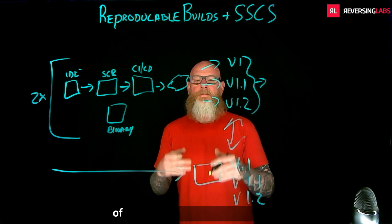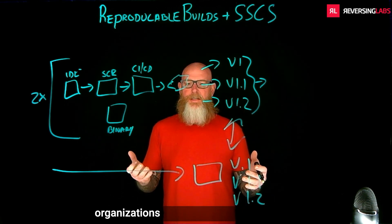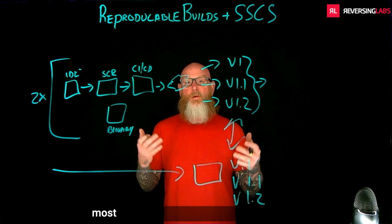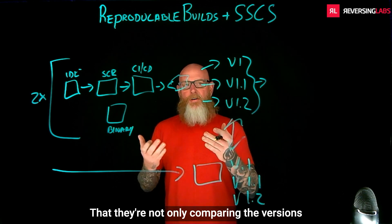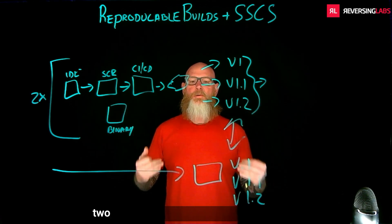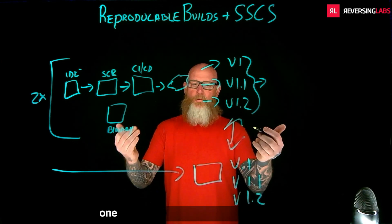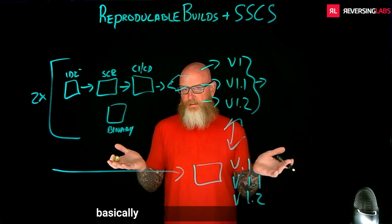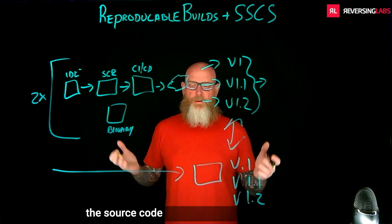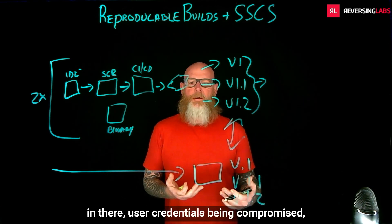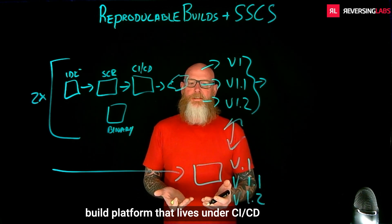You get an understanding of whether something was compromised. This is the advanced course for organizations most concerned about their supply chains — they're not only comparing versions created by a pipeline, they're creating two separate pipelines and comparing those entities because one is locked down and one is potentially compromised. This leads you to identify unknown, maybe novel attacks associated with the source code repository, leaked credentials, compromise of the CI/CD build platform, or the build platform underneath it.